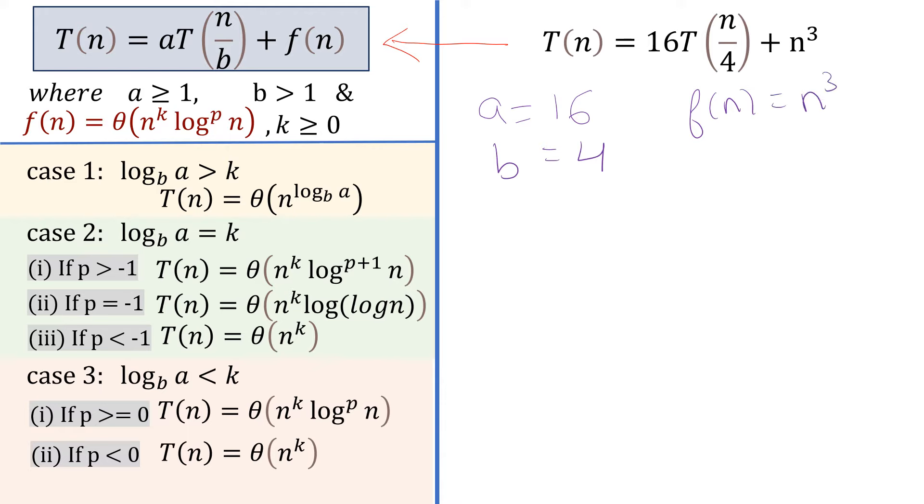Next thing you have to do is find the value of k and p. Here f(n) is given as n^k log^p n, so you have to compare these two terms. It's easy to say that k is equal to 3. Since there is no log coefficient, the coefficient of n³ is 1, so p is equal to 0 because log^0 n is 1.